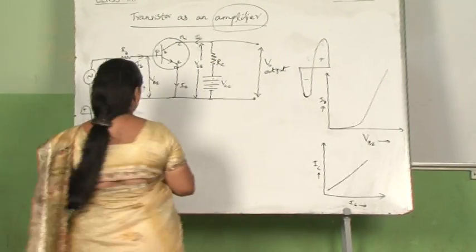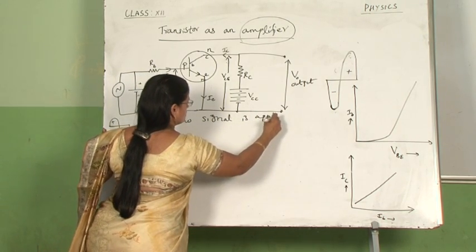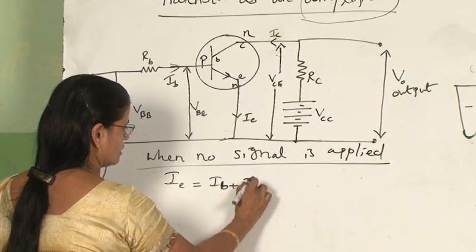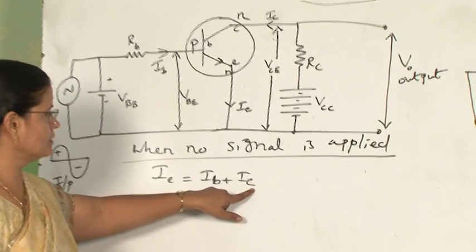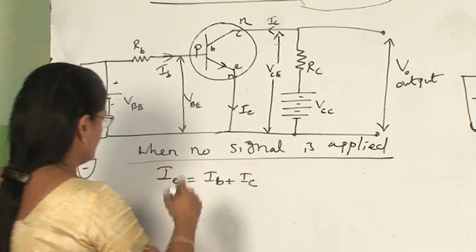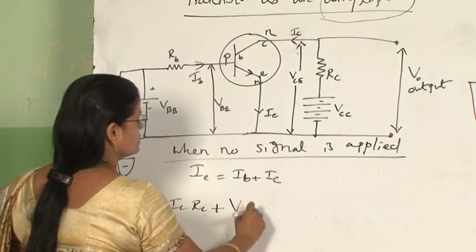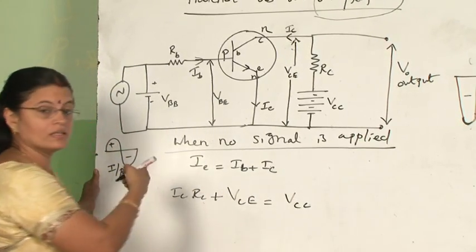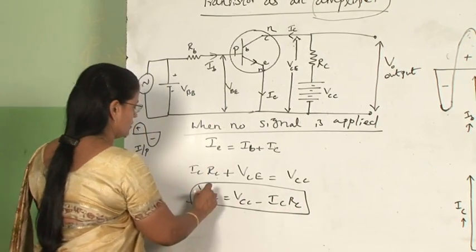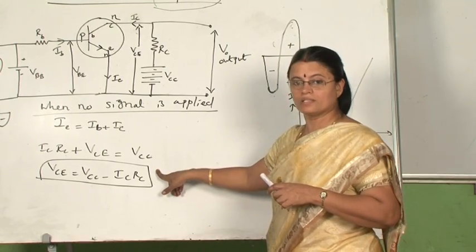Now we will see the amplifying action. When no signal is applied, the equation is IE = IB + IC — the emitter current is the sum of base current and collector current, according to Kirchhoff's junction rule. Applying Kirchhoff's loop rule: ICRC + VCE = VCC, so VCE = VCC − ICRC. Based on this equation we are going to explain the amplification action of the transistor, just as we explained the switching action using the same equation.